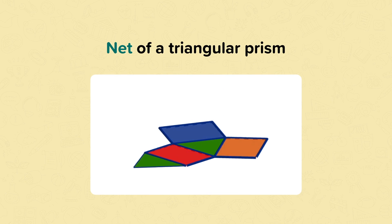This is the net of a triangular prism. It shows that a triangular prism has five faces.